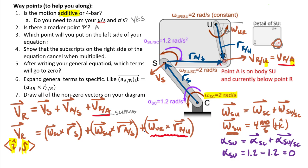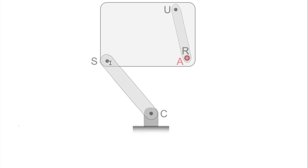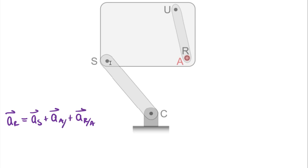Now for acceleration, using the same subscript structure: acceleration of R = acceleration of S + acceleration of A relative to S + acceleration of R relative to A. Each relative term must be split into tangential and normal components, and the slipping term also gets a Coriolis component. Both unknowns appear on the left side — the i-hat and j-hat components of acceleration of R.